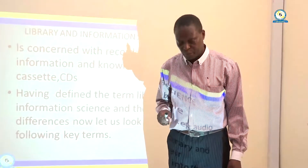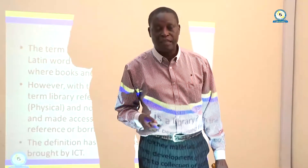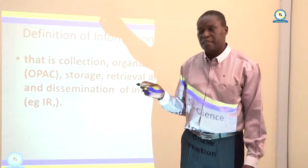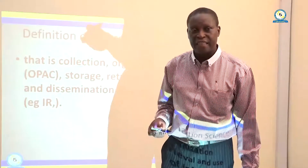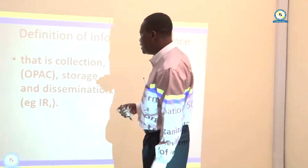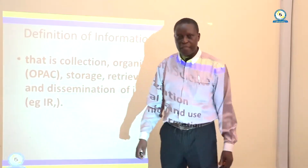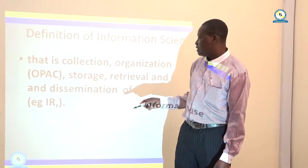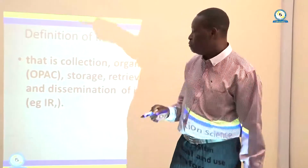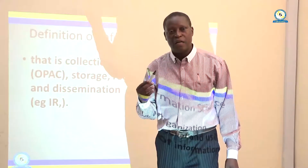In the past, if you visited the library — you go to the technical library services, you go to school libraries — you would find a very big card cabinet where cards were arranged. With the development of ICT, that kind of card catalog has been replaced by the Online Public Access Catalog. However, the functions of both remain the same.